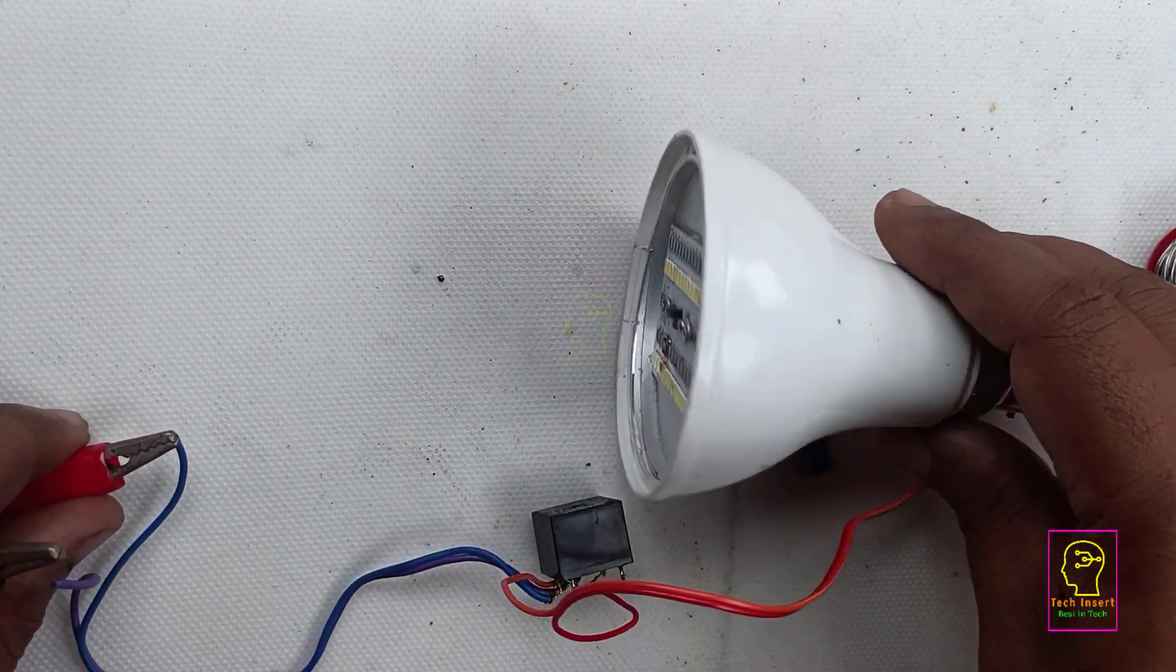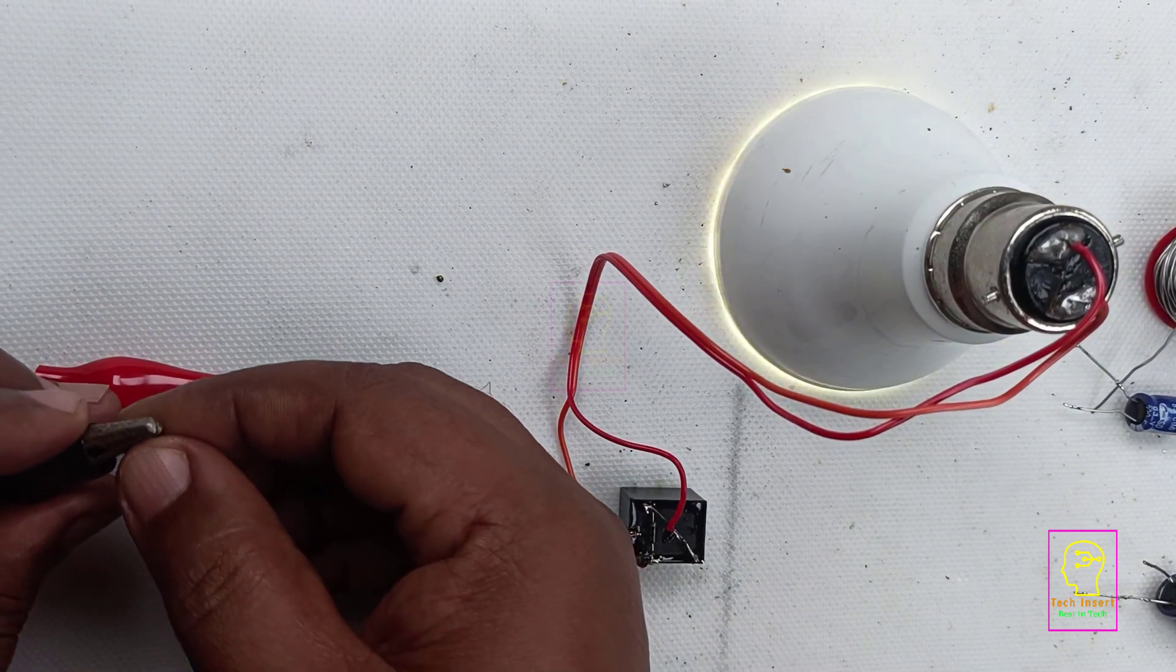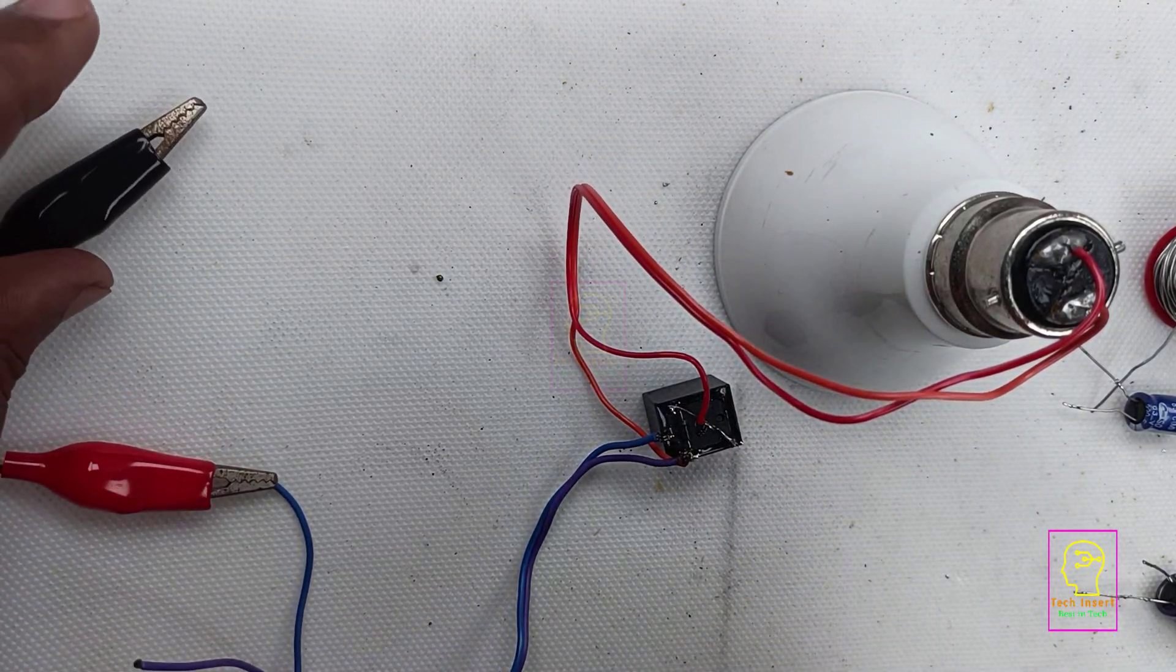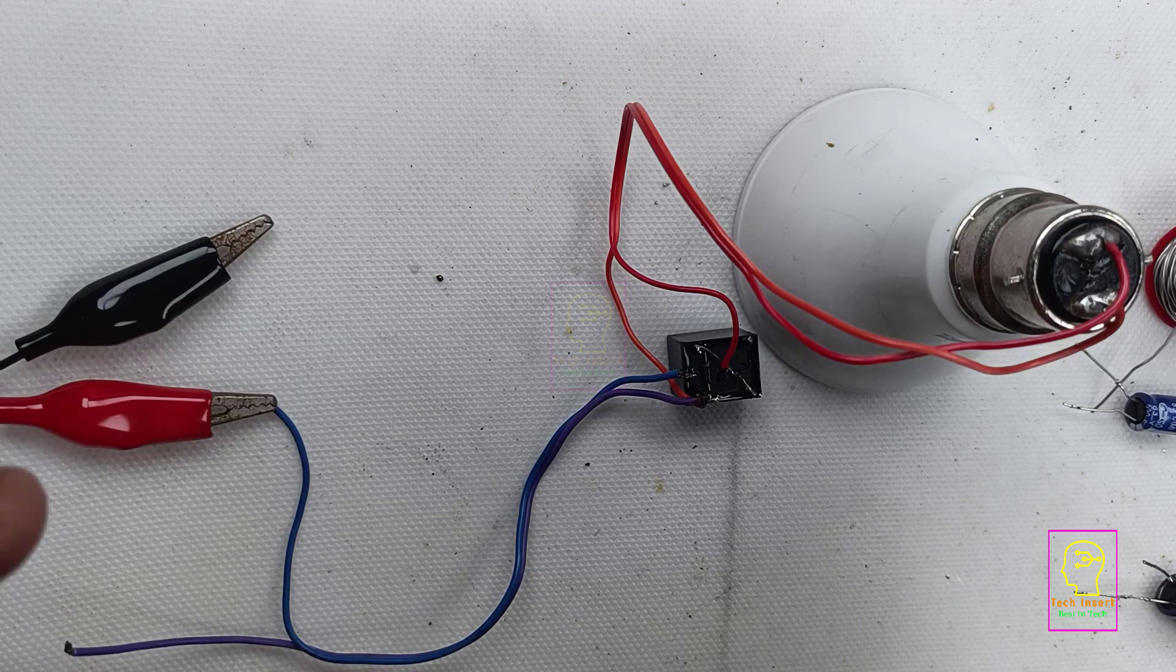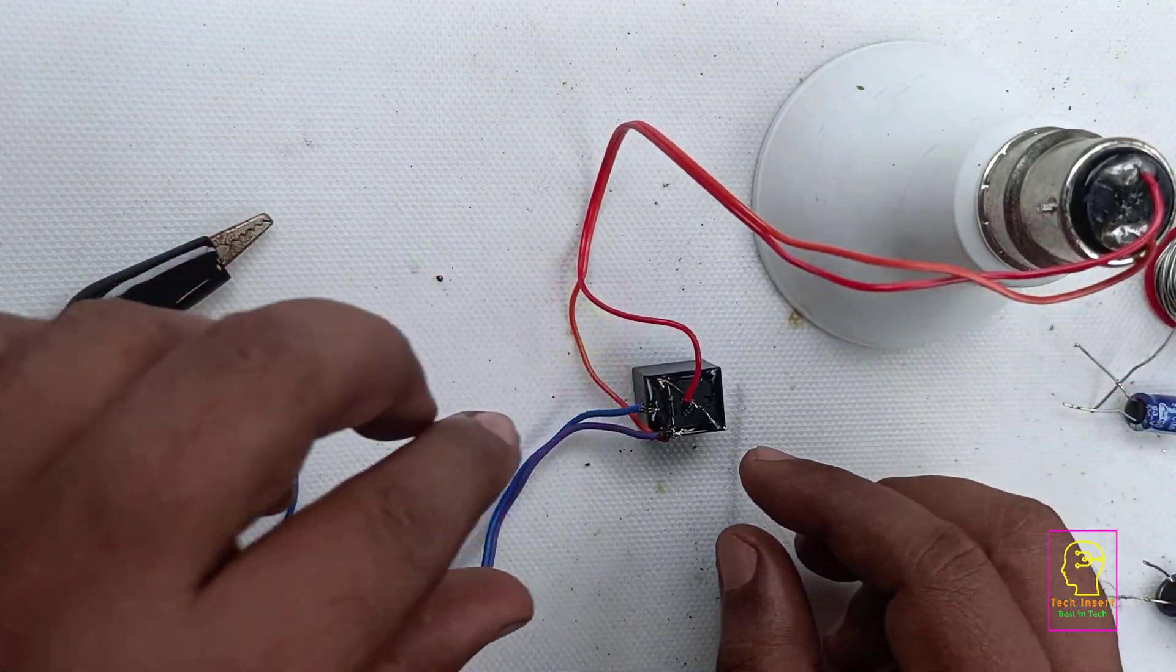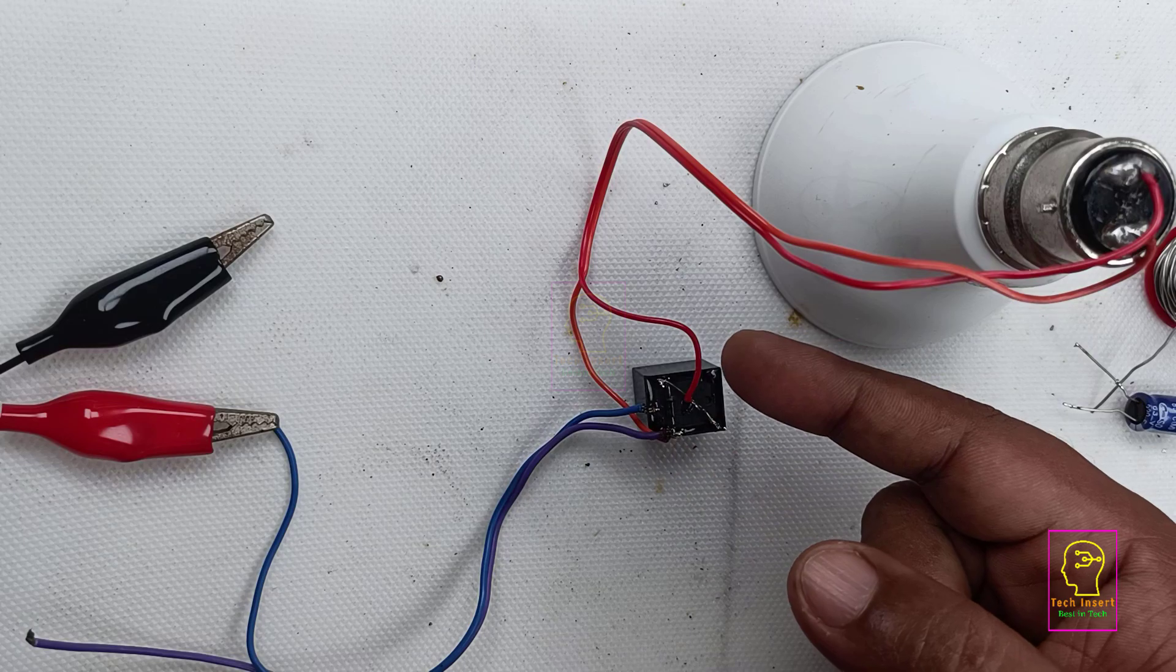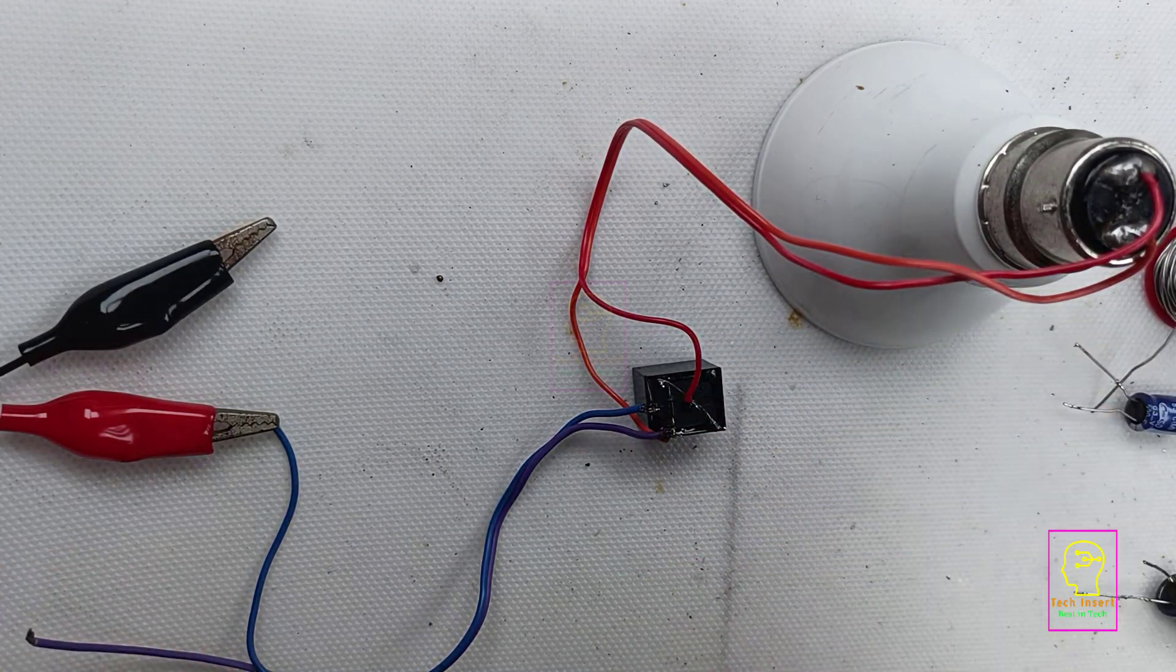This is flickering at a very high frequency. This is because the positive supply is given to the coil through the normally closed terminal of the relay. The moment we connect the power supply, the coil energizes and the common terminal will be released from NC and will connect to NO. This will de-energize the relay and again the coil gets connected to positive supply and again energizes, and this cycle continues.